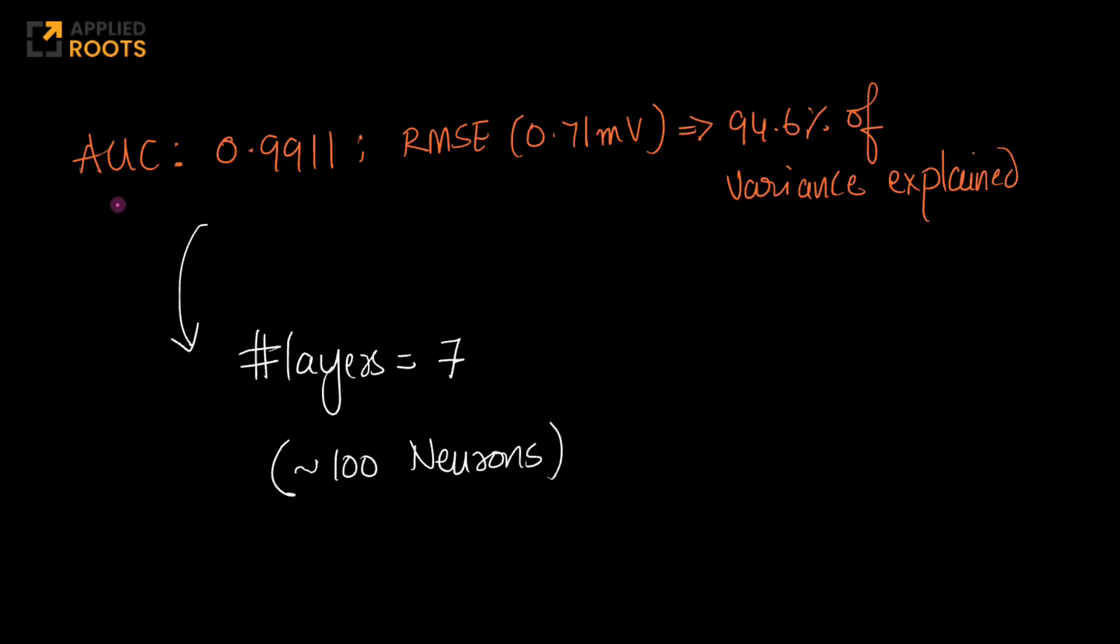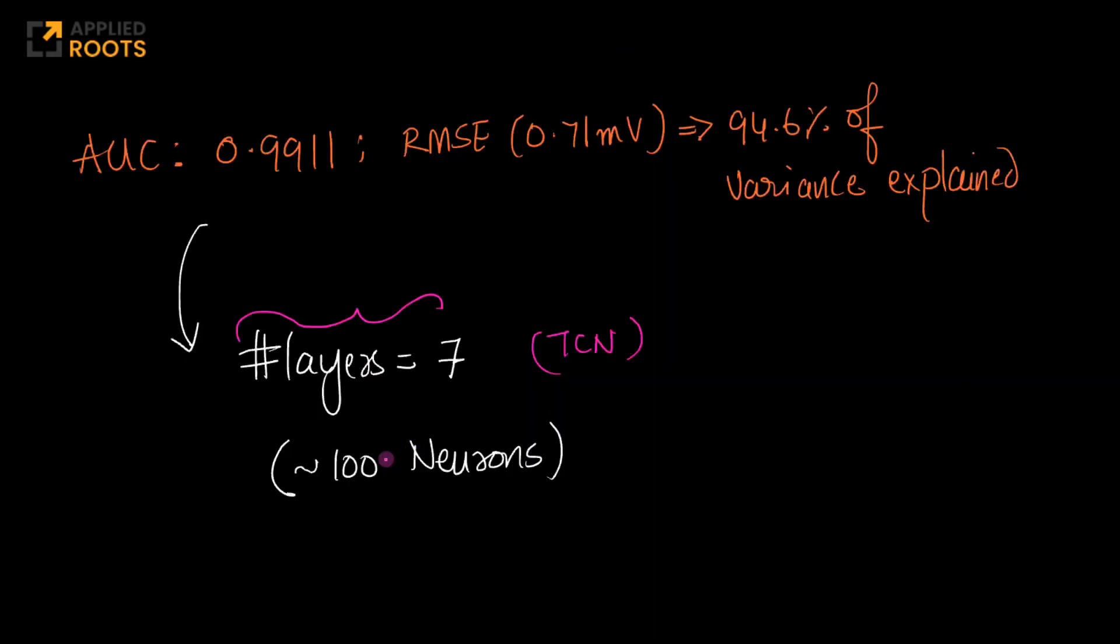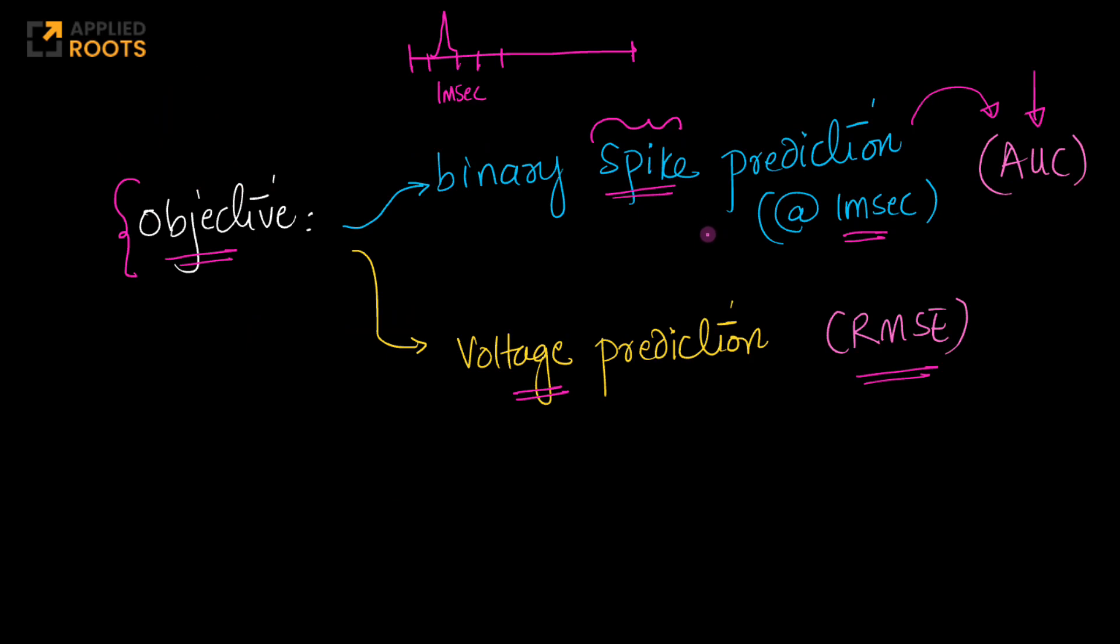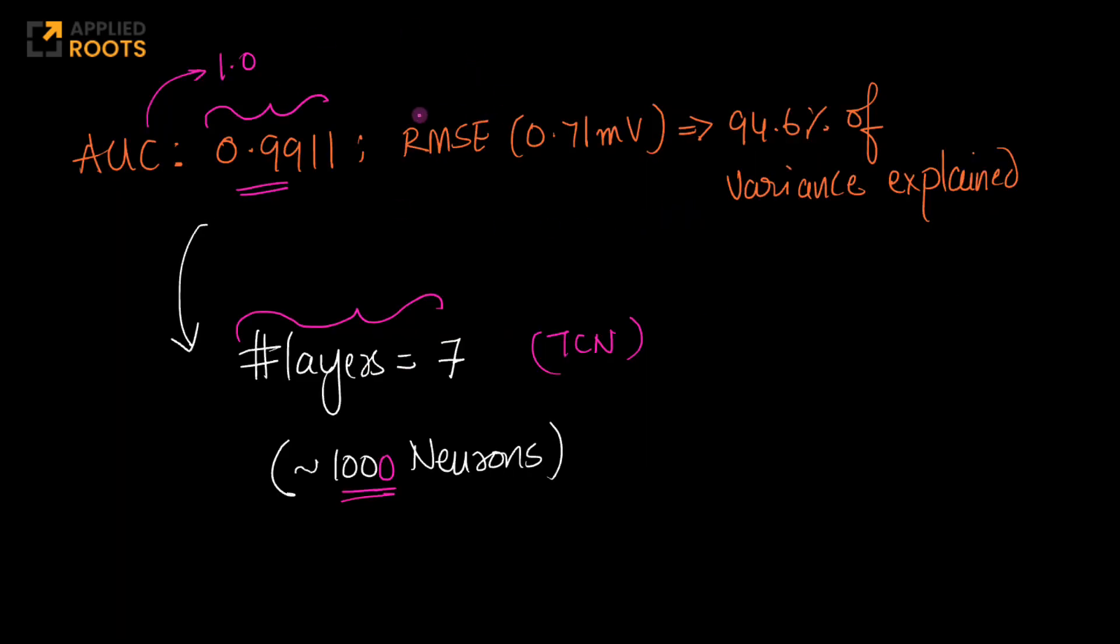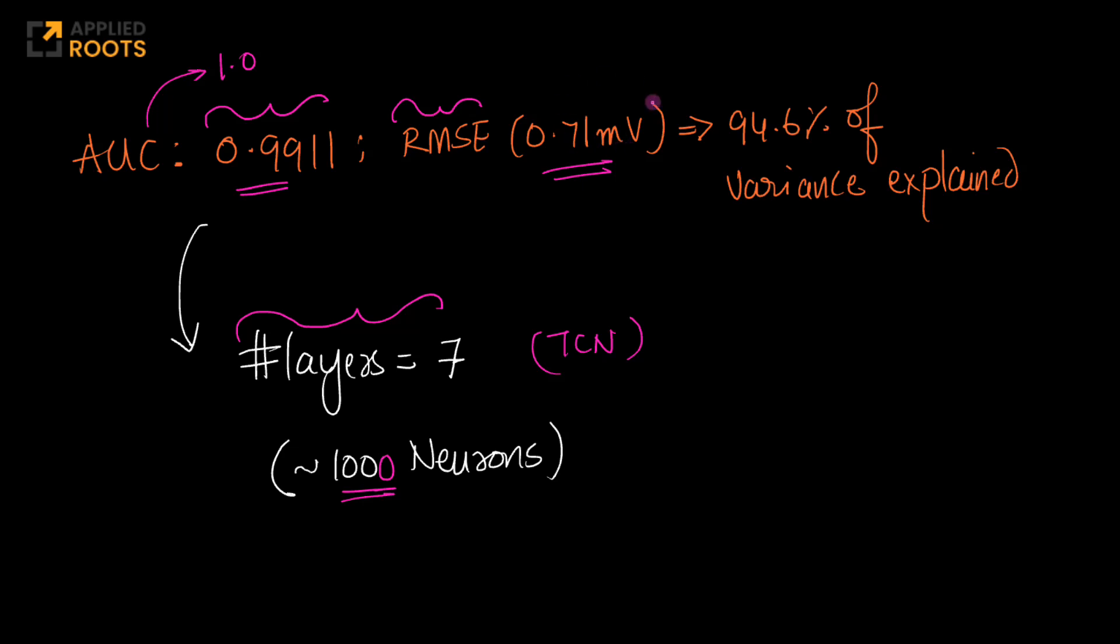They tried lots of architectures and their best architecture had seven layers in the TCN network, with each layer having about 128 neurons, approximately 1000 neurons total. Their model had an AUC of 0.9911 - very close to the ideal AUC of 1.0 - so they could predict binary spike patterns very accurately. As far as root mean square error for voltage prediction, the value was 0.71 millivolts. They could explain 94.6% of the variation in voltage just using this model. This is a very good model with high accuracy.